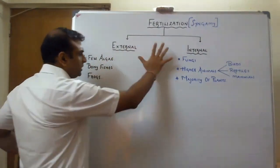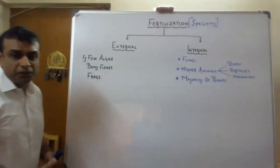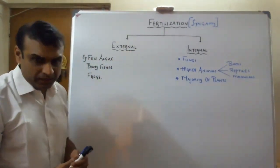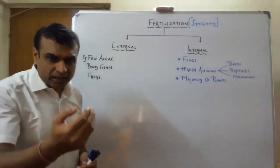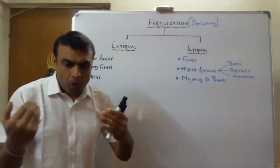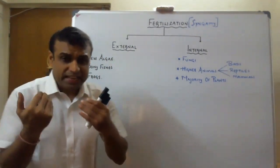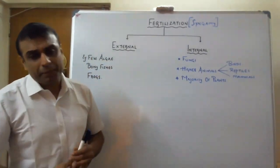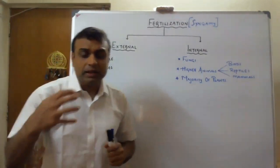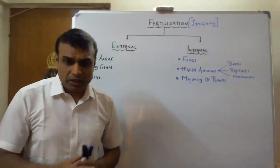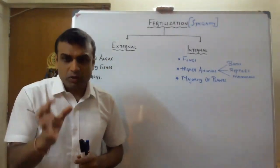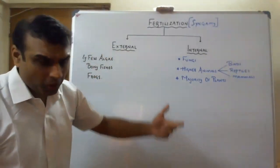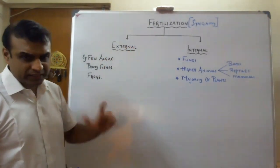There are two types of fertilization. The first is external fertilization. When we say external fertilization, male and female gametes are both released out of the body. For example, in the case of fishes, multiple eggs and multiple male gametes are released in the water, and these male gametes fertilize the egg. When fertilization occurs outside the body, we call it external fertilization.